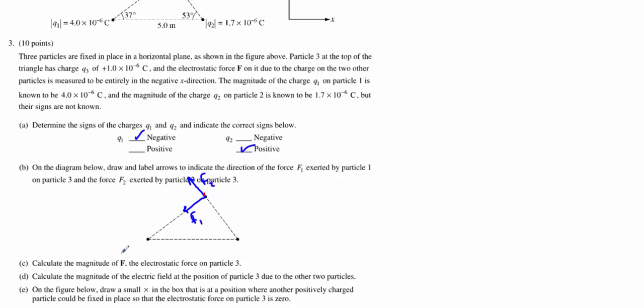Part C wants us to calculate the magnitude of the electrostatic force, the net force acting on particle 3. This is where we start doing all kinds of fun math using Coulomb's law. The general equation is F equals KQ1Q2 over the distance between them squared. Because we have two different forces, I'm going to find them separately, and then I'll figure out what to do to combine them.